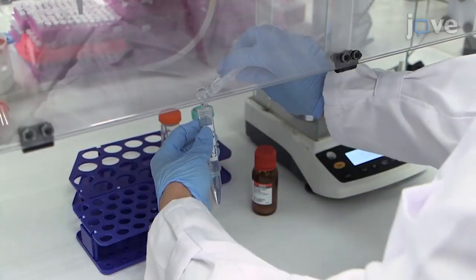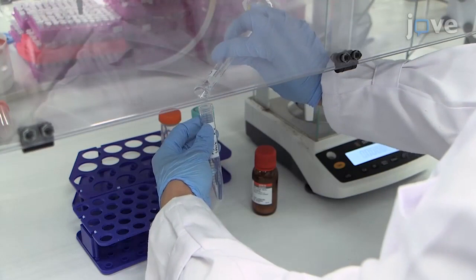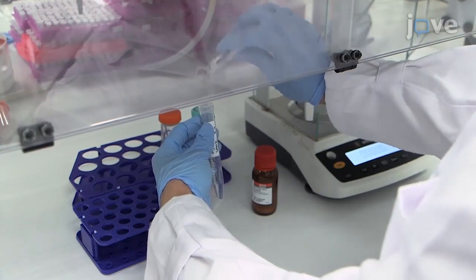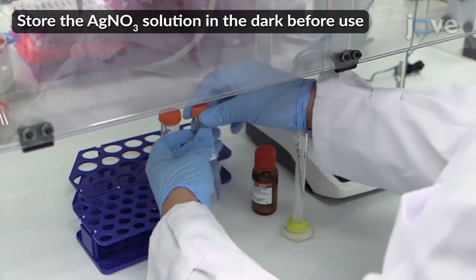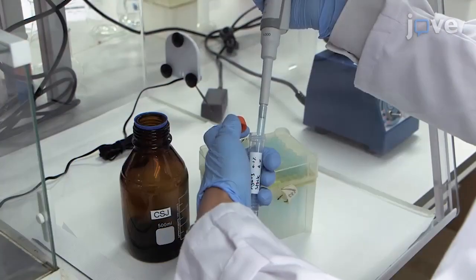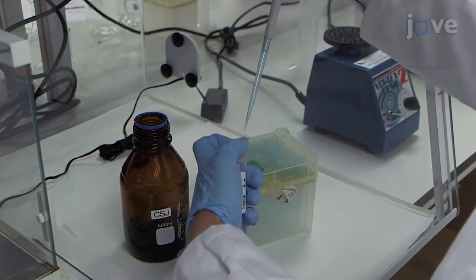First, dissolve 0.01 g of silver nitrate in 10 mL of ultrapure water to prepare a stock solution with a concentration of 0.1%. Add 100 µL of this stock solution into 100 mL of ultrapure water.